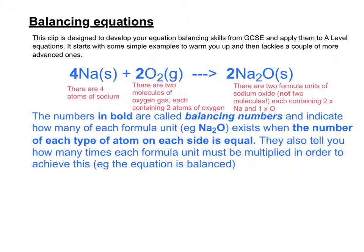So what this means is there's four atoms of sodium in 4Na, two molecules of oxygen gas in 2O₂, and each molecule contains two atoms of oxygen, so that makes four atoms of oxygen in total. And there are two formula units of sodium oxide.